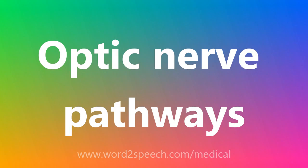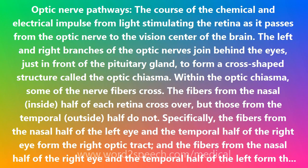Optic nerve pathways: the course of the chemical and electrical impulse from light stimulating the retina as it passes from the optic nerve to the vision center of the brain.